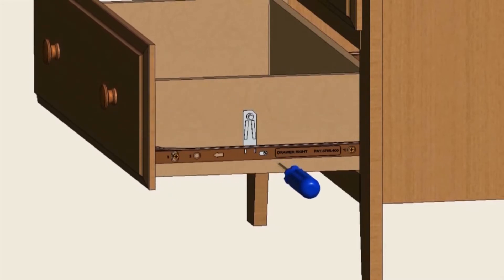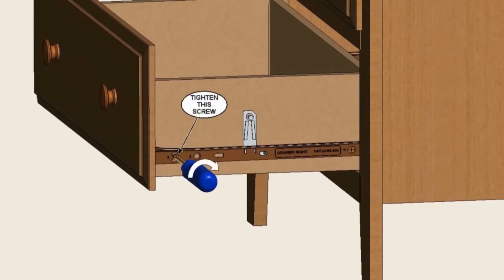By adjusting the drawers this way, it will help the drawer fronts line up better when closed. Be sure to tighten the first screw when you are finished making your adjustments.